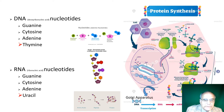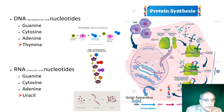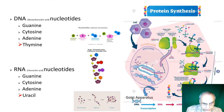Once the protein is sequenced, it goes to the Golgi apparatus for its final build — usually the three-dimensional part of the protein is assembled there. It's a very complex yet very natural process.